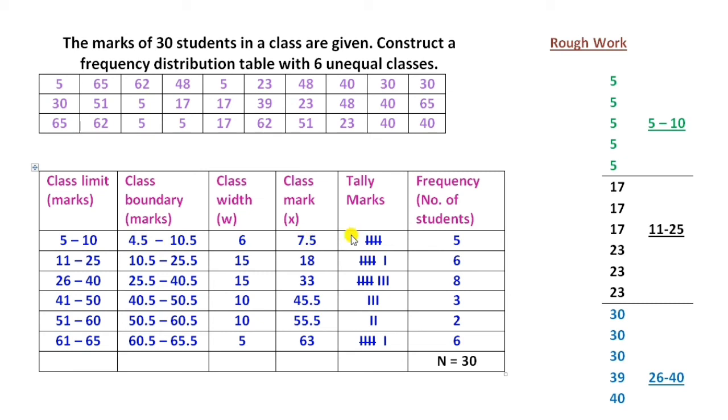Tally marks is based on class limit. You have to see how many numbers fall in each class limit and mark them with the help of small little lines. You have to strike those four little lines to make it a 5. Here, this is 5—first class frequency. This way, all the frequency has to be taken out.